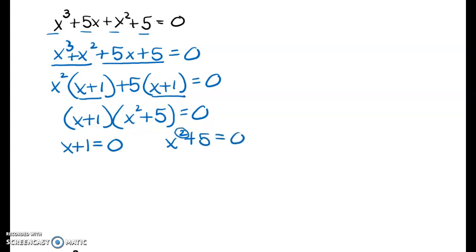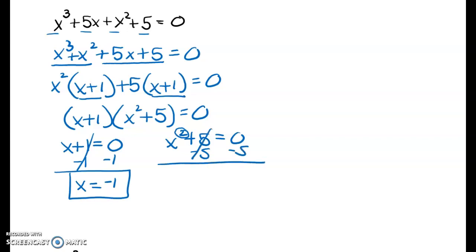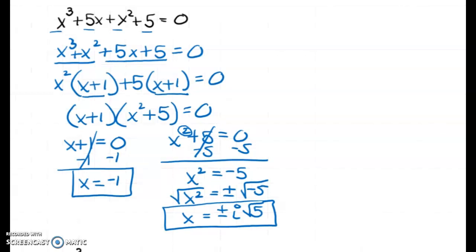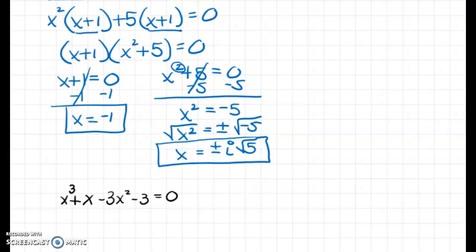The second factor x squared plus 5 equals 0 has an exponent of 2, so I'll get two answers. For the first factor, I subtract 1 from both sides to get a nice answer. For the second, I subtract 5 from both sides, then take the square root — don't forget the plus or minus, or you won't get two answers. The square root of a negative number is imaginary; 5 is prime, so I get positive i radical 5 and negative i radical 5, plus negative 1 — three answers total, as expected.